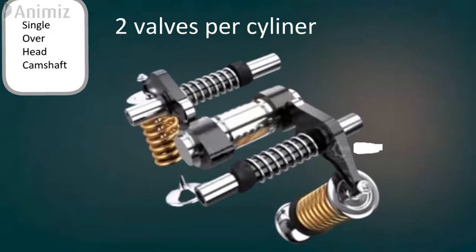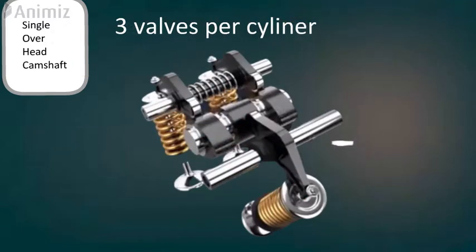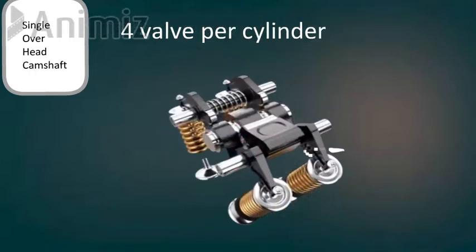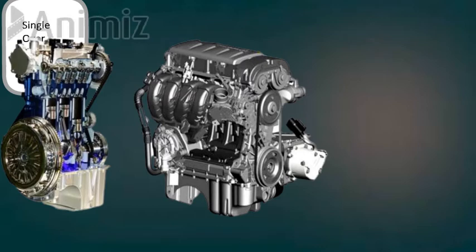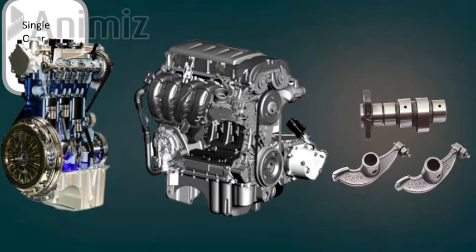In the Single Overhead Camshaft, you can use three intake valves and one exhaust valve, or a configuration of four valves per cylinder. For a four-cylinder engine using SOHC, 12 valves are used in total. One camshaft is used to control the engine.